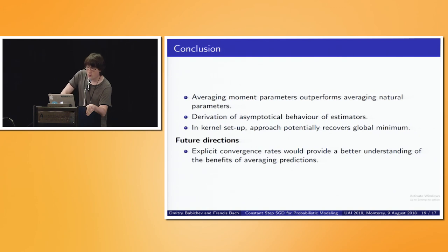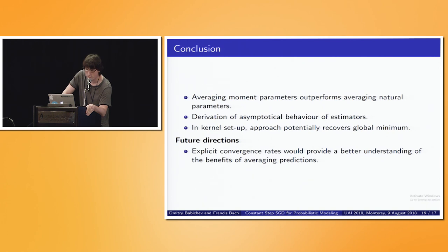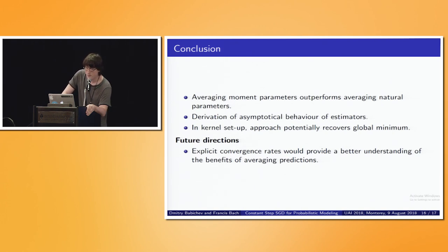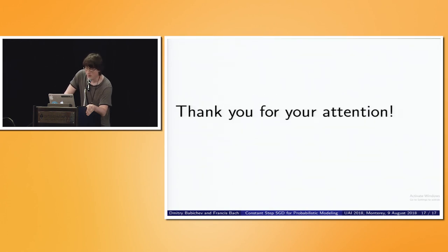In conclusion: firstly, we introduced a different type of averaging that converges not to a suboptimal solution but to the optimal solution. Secondly, we derived asymptotic analysis for our estimator, and showed that in the kernel approach this averaging potentially recovers the best solution. A future direction is to obtain more explicit convergence rates. Thank you for your attention — questions are welcome.